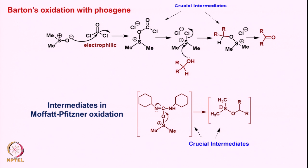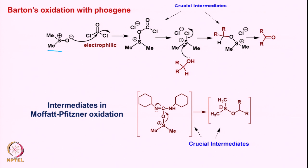Barton's oxidation with phosgene is also somewhat similar. Here DMSO attacks on phosgene — which is a compound with two chlorines attached to a carbonyl group, acting as an electrophile. DMSO attacks onto this carbon, leading to the formation of this intermediate. These reactions have to be done at low temperature.